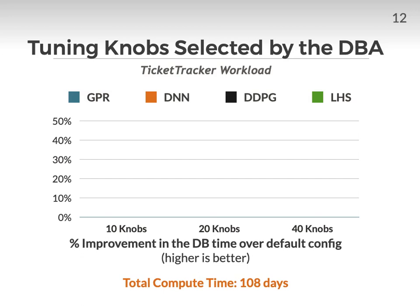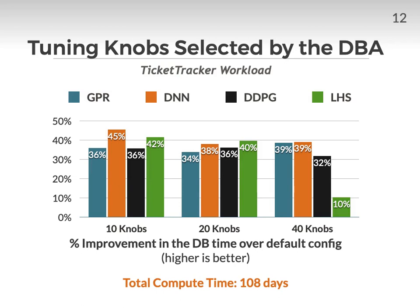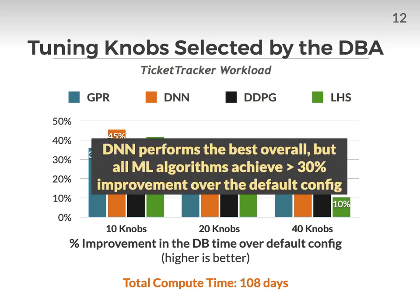In this experiment, we compare the efficacy of the four tuning algorithms when tuning 10, 20, and 40 knobs. The list of knobs was selected by the DBA based on those they believe to be most important. We plot the percent improvement in dbtime over the default configuration — note that some knobs in the default configuration had already been tuned, including the size of the buffer pool. The results show no major difference in quality among the three ML-based algorithms; they're all able to beat human tuning. GPR converges the fastest, but DNN has slightly better results. DDPG would likely perform better if run longer, but due to time constraints we couldn't do this. Although LHS is a competitive baseline for 10 and 20 knobs, its tuning sessions took much longer since it picks poor performing configurations more often. Overall, DNN performs the best, but all ML-based algorithms improved performance by at least 30% over the default configuration.